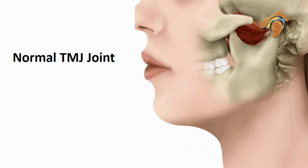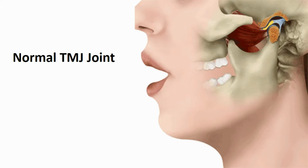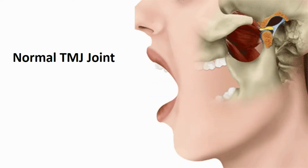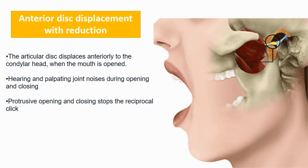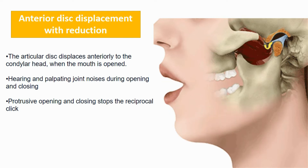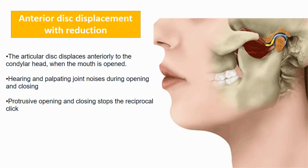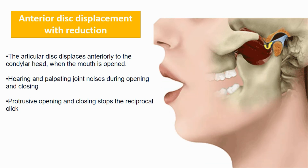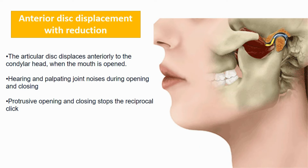In anterior displacement, the disc is positioned anterior and medial to the condyle in the closed mouth position. In anterior displacement with reduction, during opening the condyle makes friction with the disc while the retrodiscal tissue pulls the disc slightly backward to its normal position. This friction causes the clicking sound. This type is called displacement with reduction because the disc is restored to its normal position on opening. There is no limited mouth opening in this type.